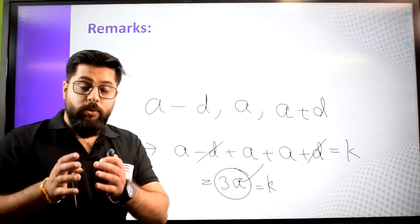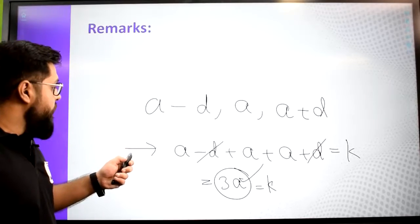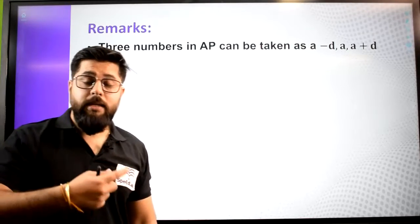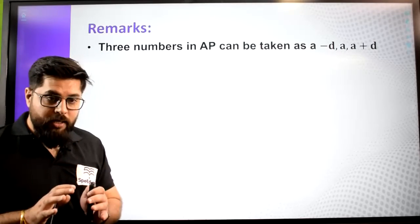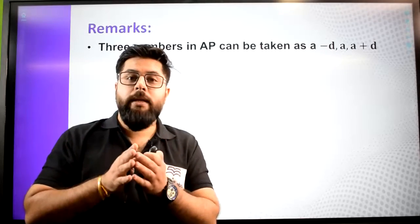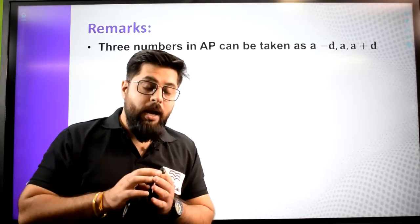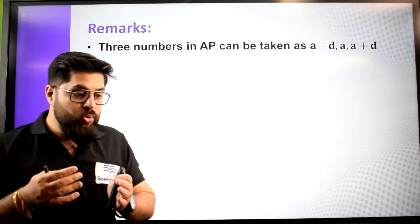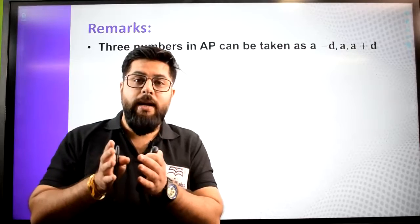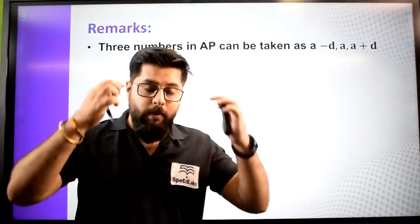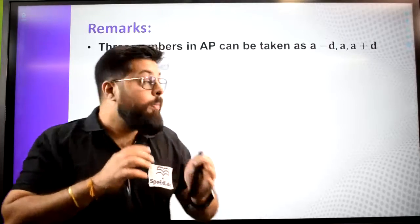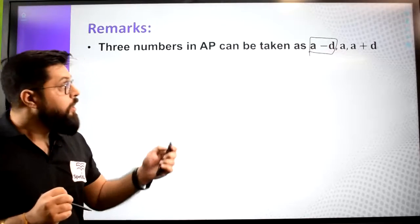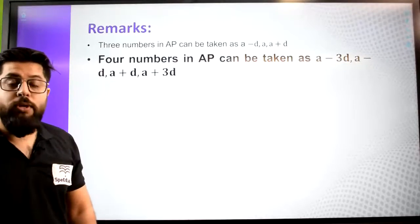The thumb rule is: three numbers in an AP can be taken as a minus d, a, and a plus d. One important thing to remember — we use this form when the sum is given. Note that here a is not the first term; a minus d is the first term. We have been writing AP as a, a plus d, a plus 2d from the start, so our mind is set that a is the first term, but here a minus d is the first term.